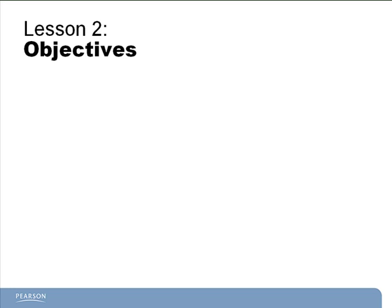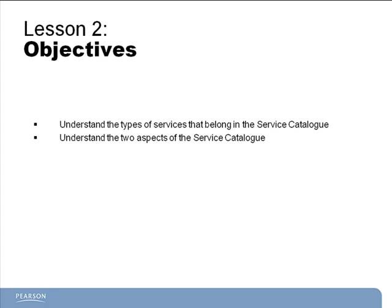Lesson 2 outlines our first process in the Service Design book, which is called Service Catalog Management, and this lesson has three objectives. First, we'll understand the types of services that are stored in the Service Catalog. Next, we'll learn the two aspects of the Service Catalog, and we'll finish up with a short list of duties for the person filling the Service Catalog Manager role.